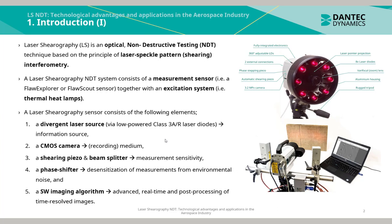A Laser Shearography sensor consists of the following elements: a divergent laser source, usually via low-powered class 3A or 3R laser diodes, which provides the information source required by the sensor; a CMOS camera contained within the sensor as the recording medium; a shearing piezo and beam splitter providing measurement sensitivity; a phase shifter for desensitization from environmental noise; and a software imaging algorithm for advanced real-time and post-processing of time-resolved images.